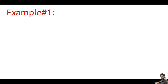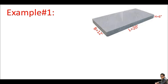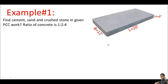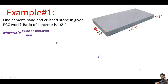Now let's do the first example — a PCC slab or PCC work. The dimensions are given and we are asked to find cement, sand, and stone for the given PCC work. The ratio is 1:2:4. All values are given, so let's go straight into the solution. The formula is: Material = (Ratio of material / Sum of ratios) × Dry volume.